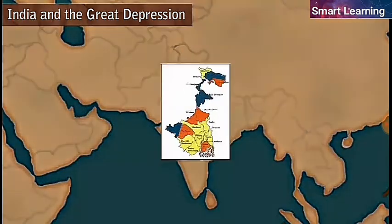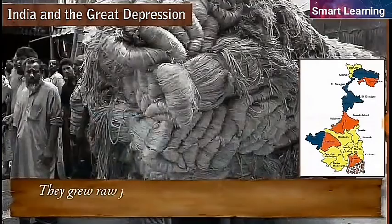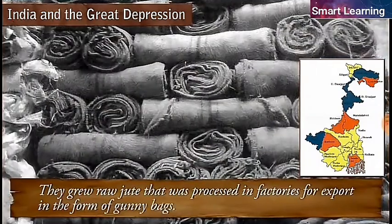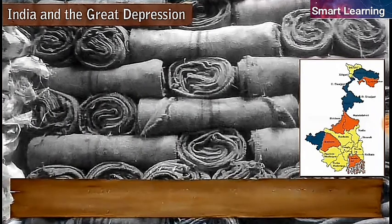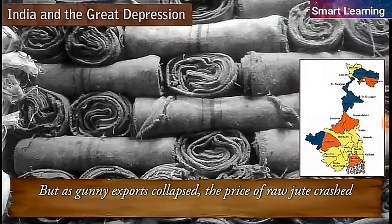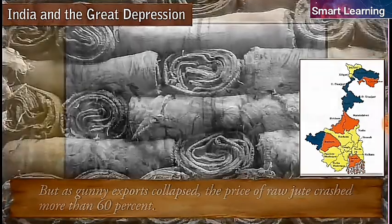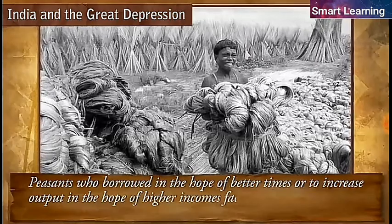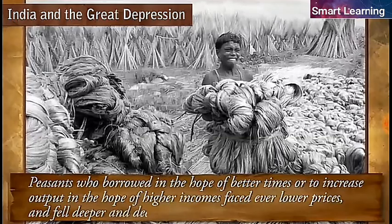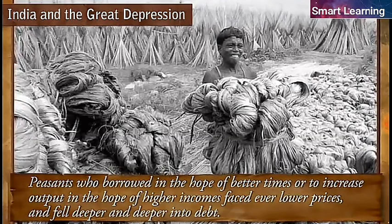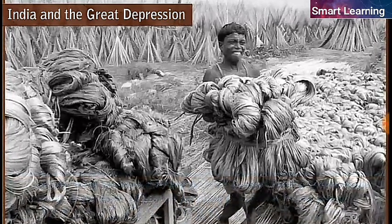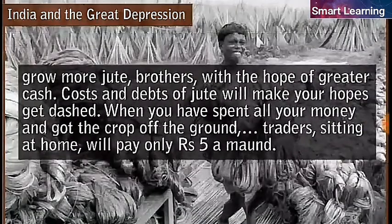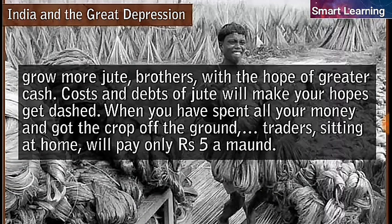Consider the jute producers of Bengal. They grew raw jute that was processed in factories for export in the form of gunny bags. But as gunny exports collapsed, the price of raw jute crashed by more than 60 percent. Peasants who borrowed in the hope of better times, or to increase output in the hope of higher incomes, faced even lower prices and fell deeper and deeper into debt. Thus the Bengal jute growers' lament: 'Grow more jute, brothers, with the hope of greater cash — costs and debts of jute will make your hopes get dashed. When you have spent all your money and got the crop off the ground, traders sitting at home will pay only five rupees a mound.'